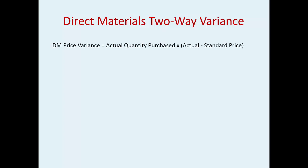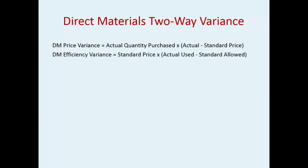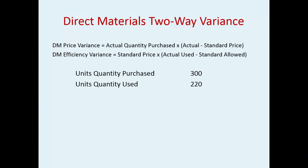The direct materials price variance is calculated as actual quantities purchased times the difference between actual and standard price. The direct materials efficiency variance is calculated similarly. In this example, units quantity purchased is 300 and units quantity used is 220.